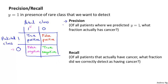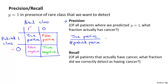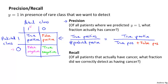We're going to compute two numbers. The first is called precision. Of all the patients where we predicted that they have cancer, what fraction of them actually have cancer? The precision of a classifier is the number of true positives divided by the number predicted as positive — that is, true positives divided by true positives plus false positives. High precision is good: it means that of all patients we told 'we think you have cancer,' most of them actually do have cancer.